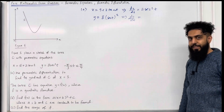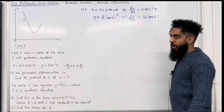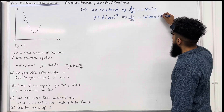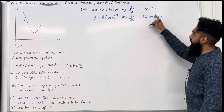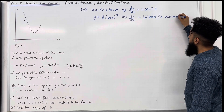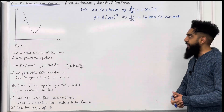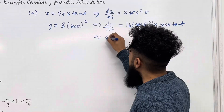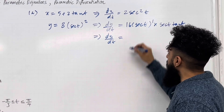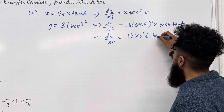Bring down the power: 8 times 2 is 16. Subtract 1 from the power: 2 take away 1 is 1. Multiply by the derivative of sec t, which is sec t tan t. I can simplify this: dy over dt equals 16 sec squared t tan t.